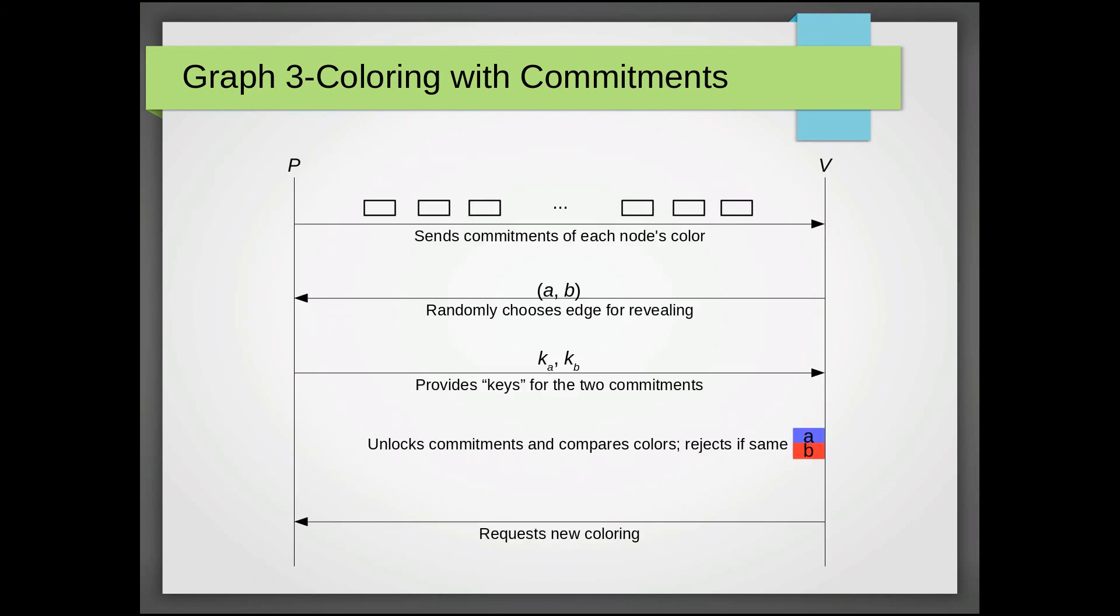So this is a graphical representation of every round. What happens first is that P decides on its coloring and sends these as commitments to V. So you can just imagine these as the locked boxes I mentioned before.